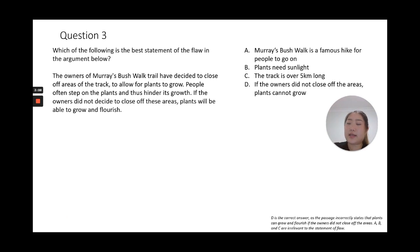The argument is that if the owners did not decide to close off these areas, plants will be able to grow and flourish. This is directly contradicting the information they provided beforehand. They said that if people were in the area and these areas weren't closed off, it would hinder the growth. What does the word hinder mean? It means to stop or prevent.